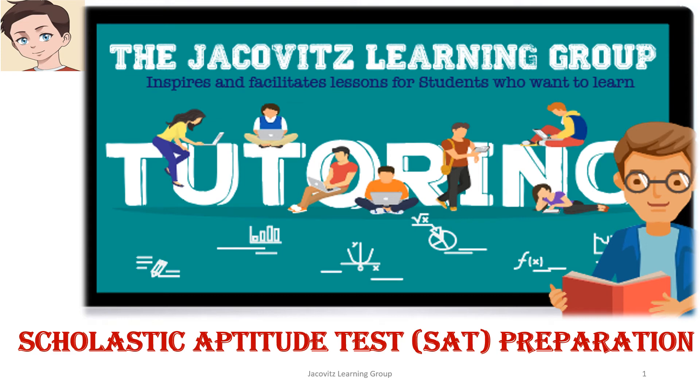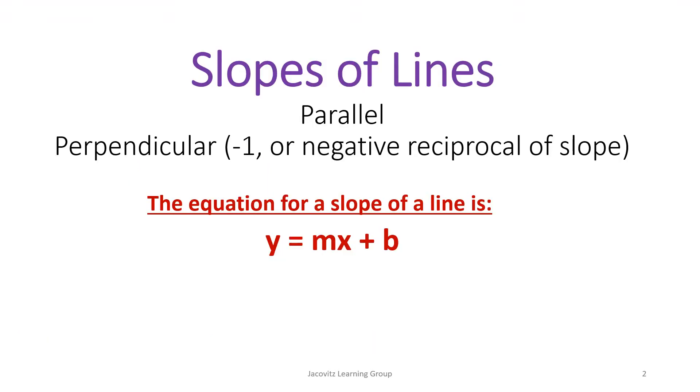Hi, this is Scholastic Aptitude Test preparation. We're just going to do a real quick concept here on slopes of lines. Remember, slopes of lines are either parallel, meaning they will represent each other, or they're negative reciprocal of the slope.